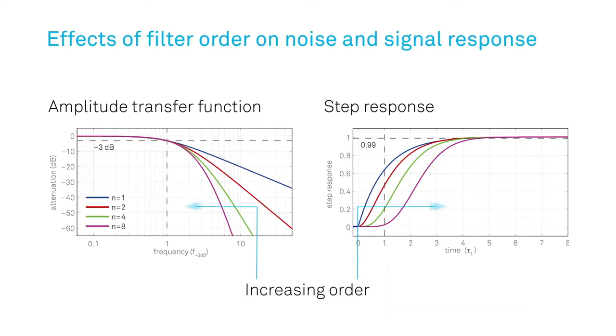The shape of the filter can also be adjusted by choosing its order. A higher order leads to more ideal, rectangular filter transfer function that blocks frequencies outside the filter bandwidth more efficiently, but takes more time to settle, causing a phase delay.